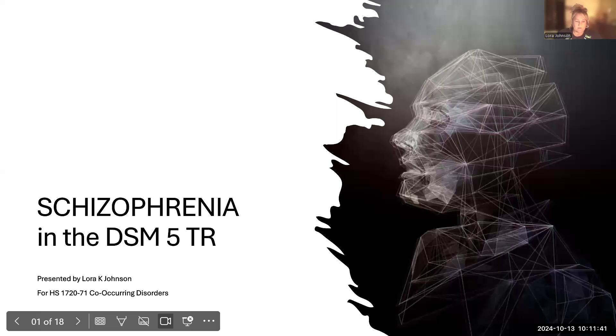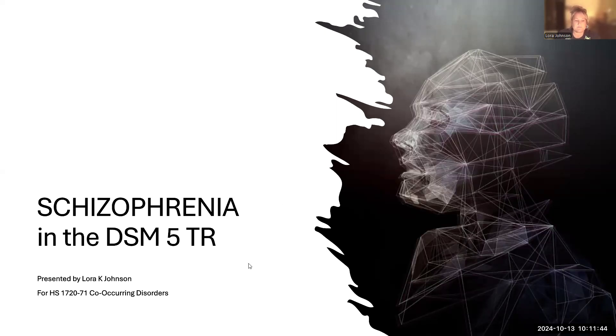Hi, my name is Laura Johnson, and I am going to be giving a presentation today on Schizophrenia based on what I learned in the DSM-5. Give me a moment while I share my screen and I will go over the presentation with you. So again, I'm presenting on Schizophrenia from what I learned in the DSM-5, and I'm doing it for our Human Services 1720 class, Co-Occurring Disorders.